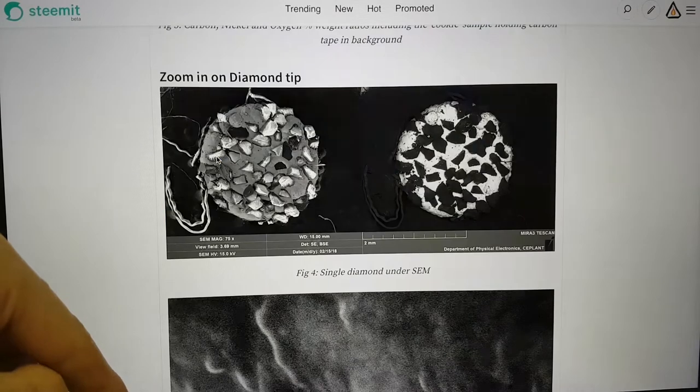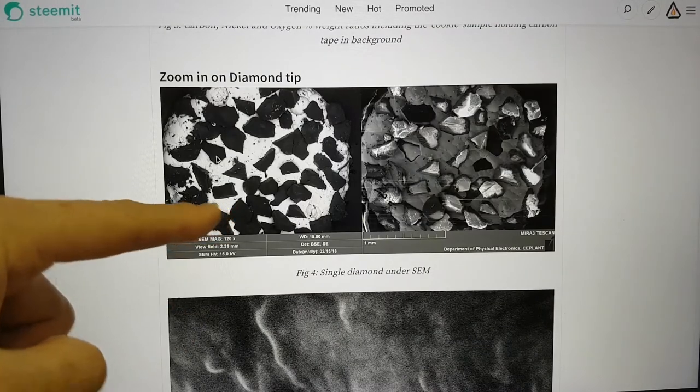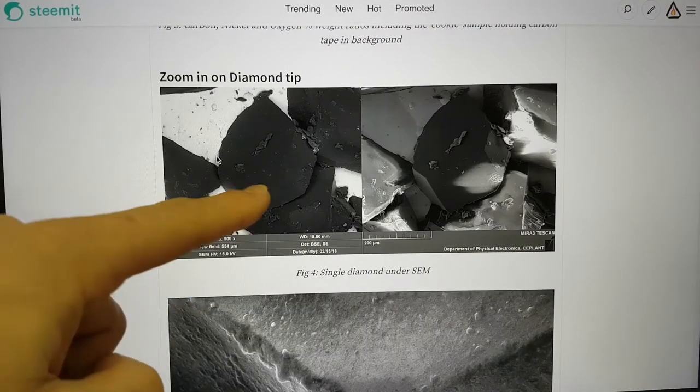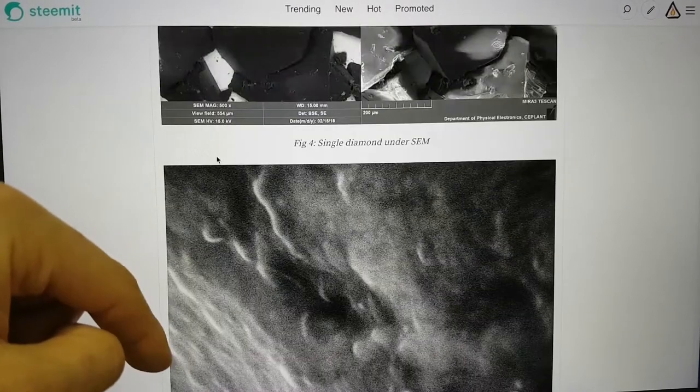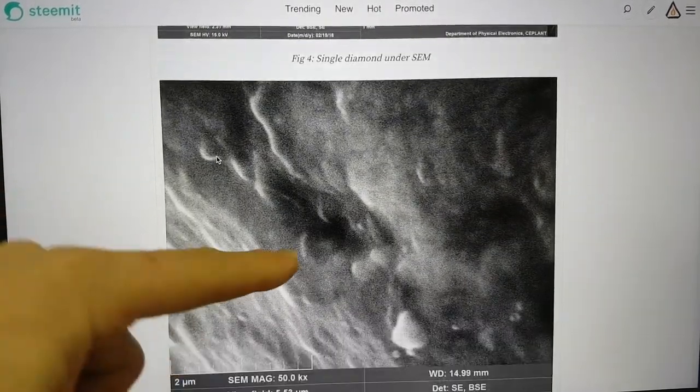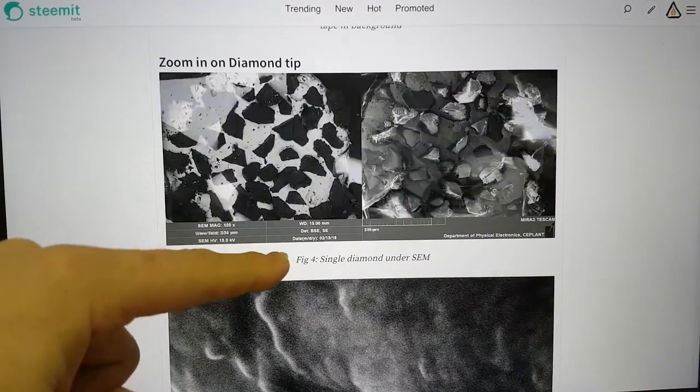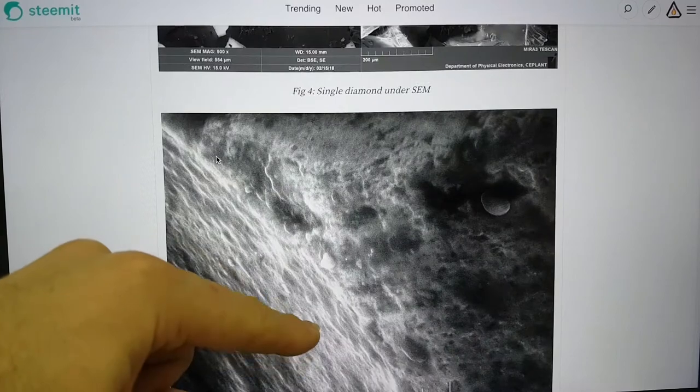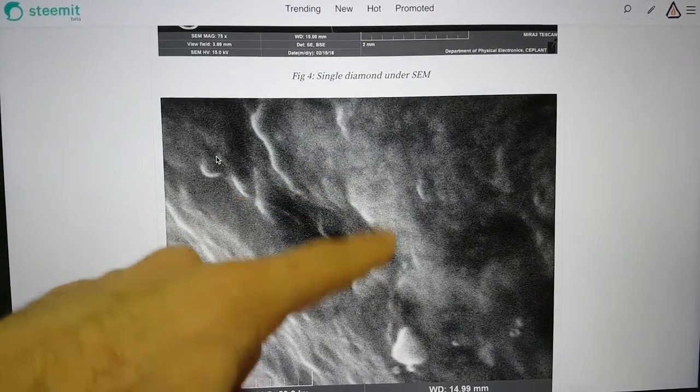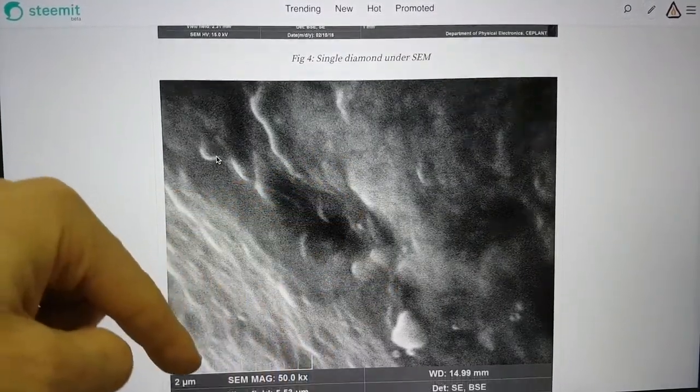However when we delve in a little bit closer, when we zoom in, here's a diamond, a single diamond here. When you look at this up close on the tip, we're actually looking at this diamond on this tip here in this SEM image, right close in.